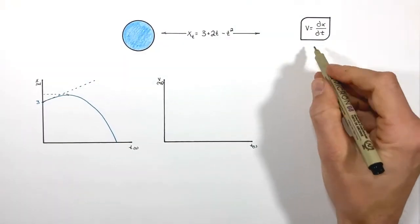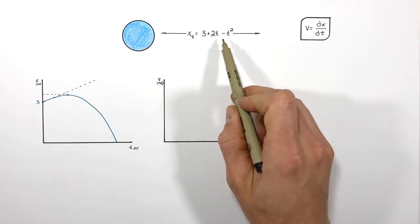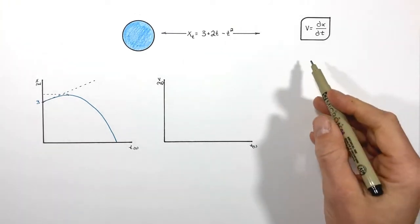And really all that is to say is that if we were to take the derivative of a position versus time function with respect to time, we would now have velocity. So let's do exactly that.